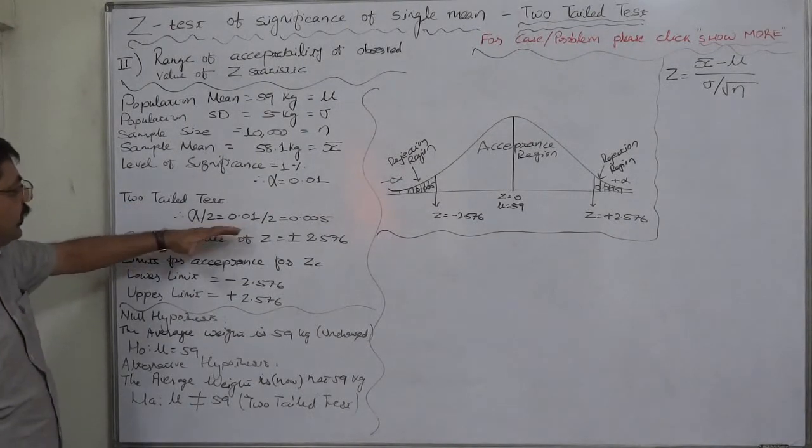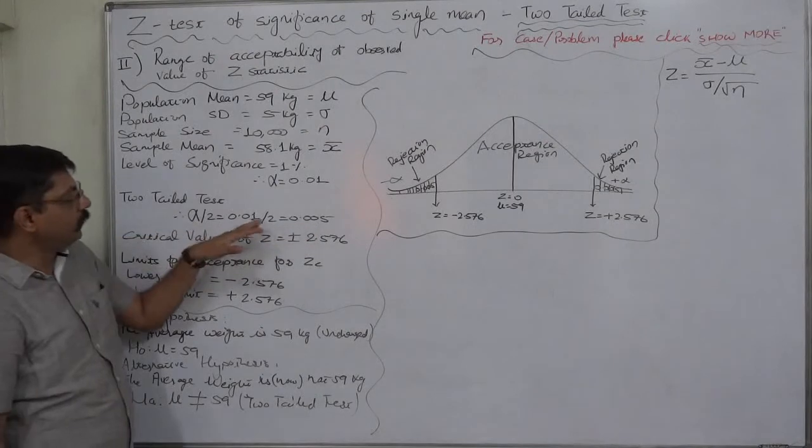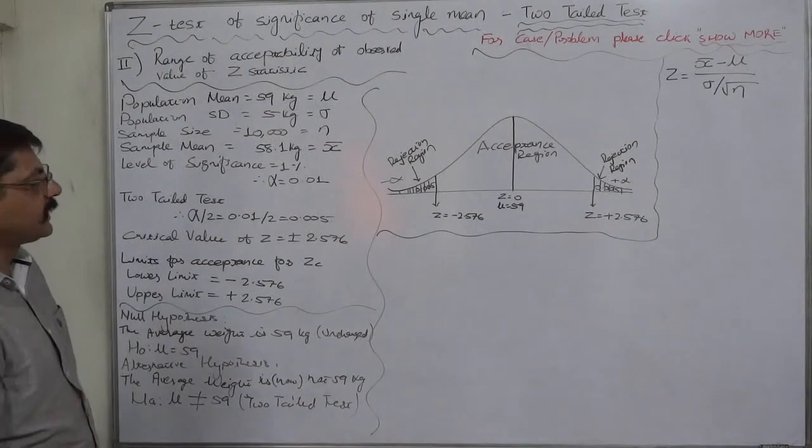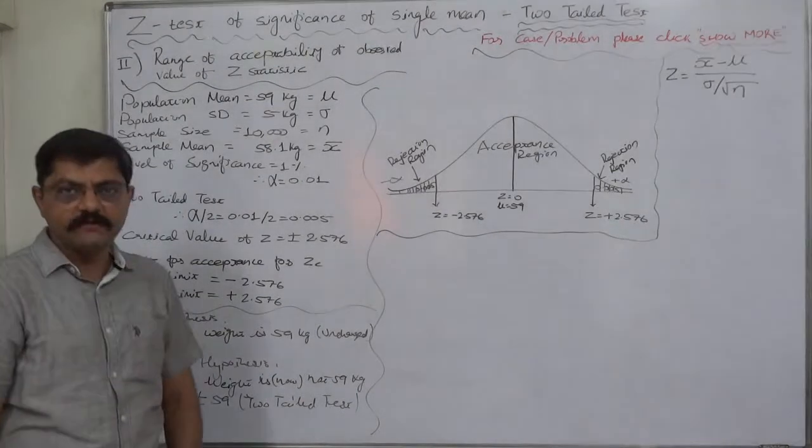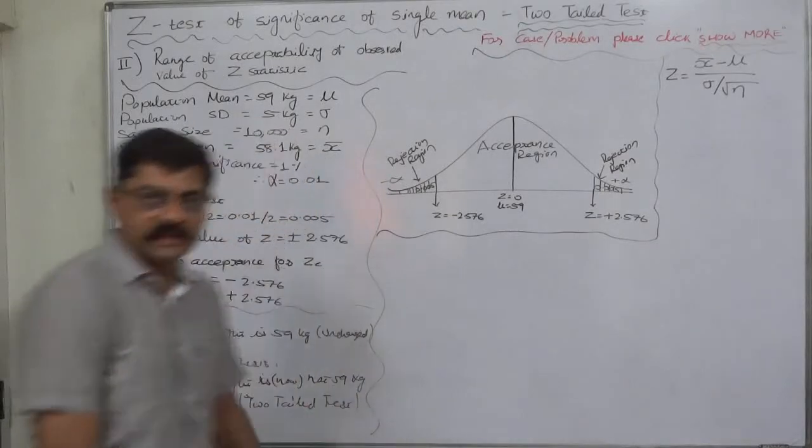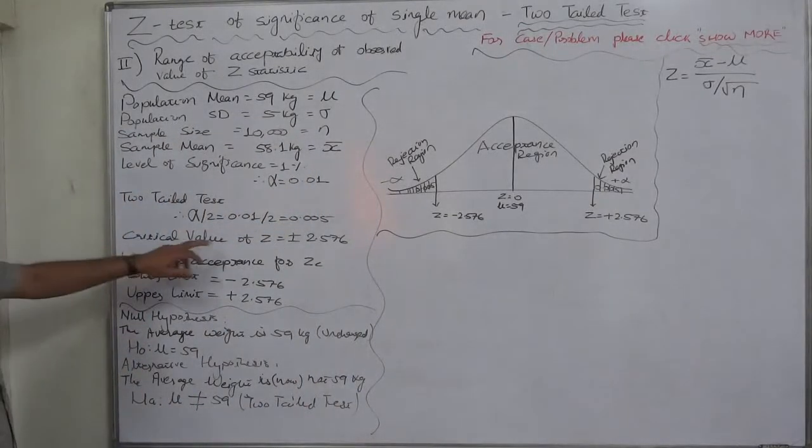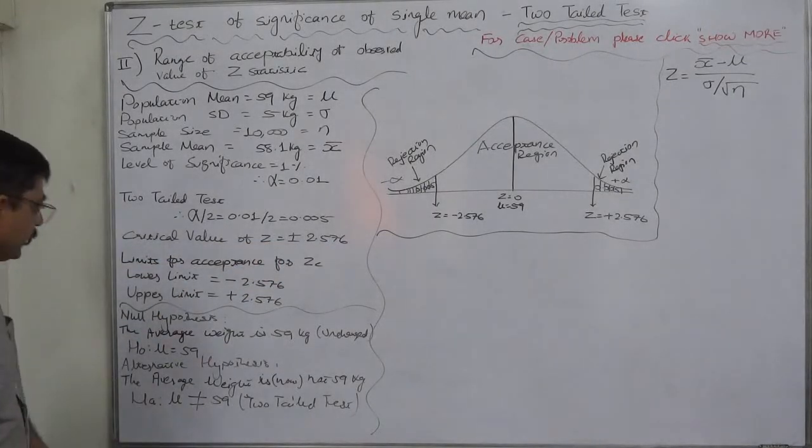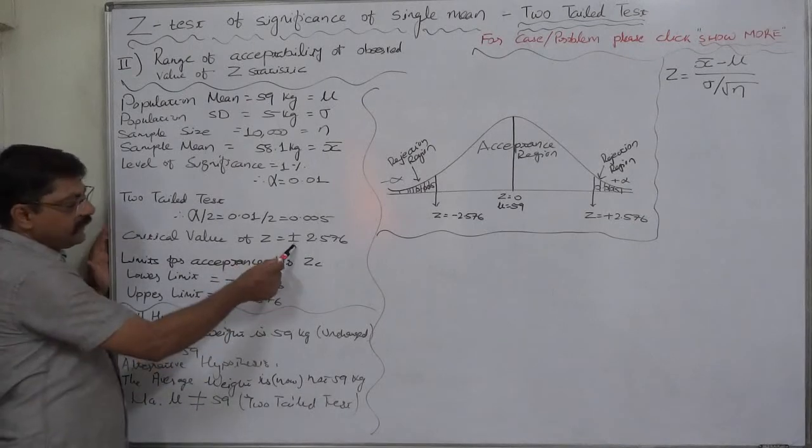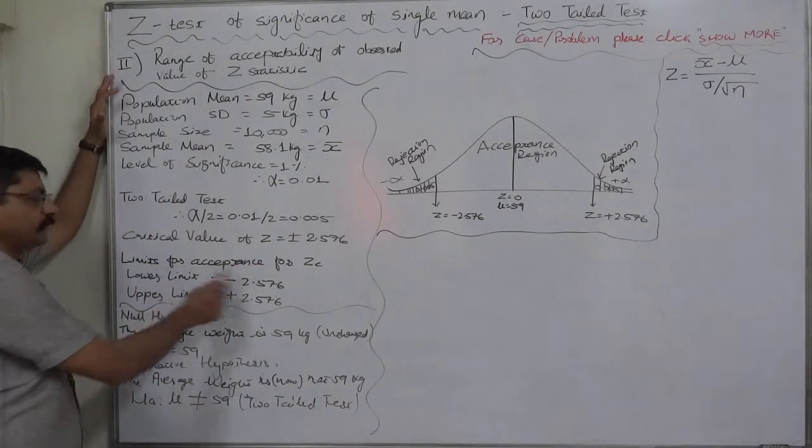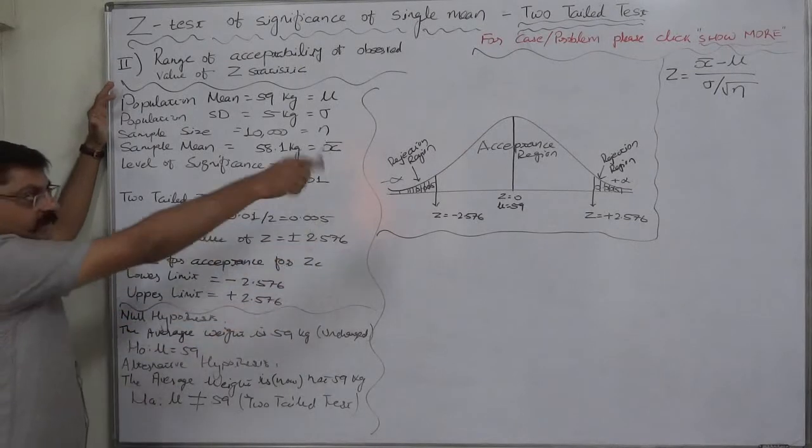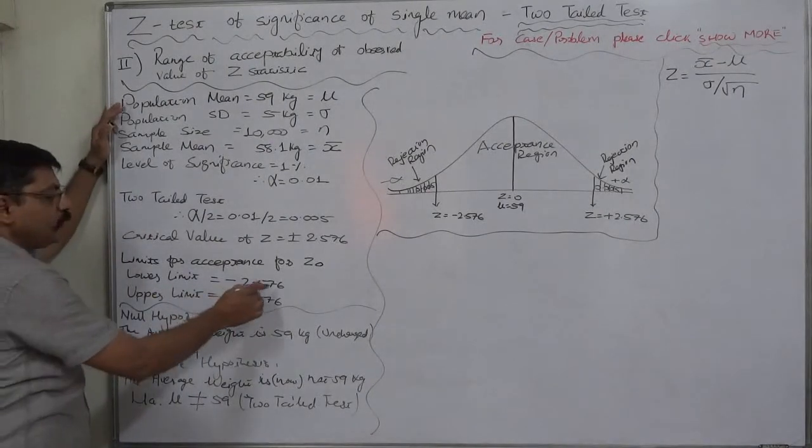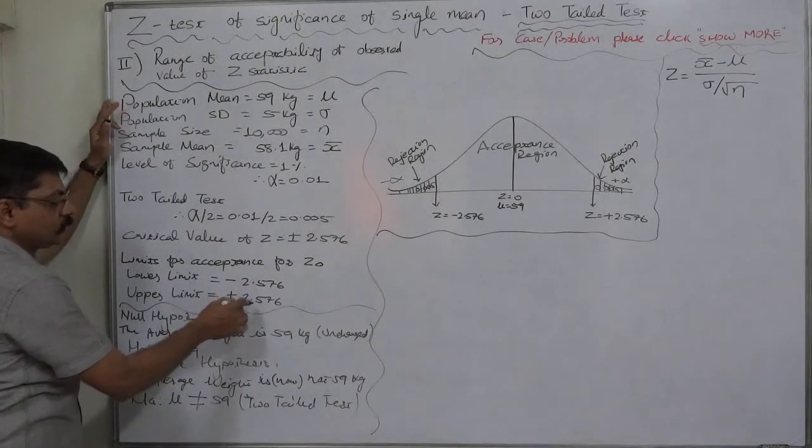Since this is two-tailed test, we need to split the alpha value 0.01 divided by 2, 0.005. That helps us to decide the critical value from the chart which I have already discussed in the previous lecture. And the critical value of Z comes to 2.576. Since this is two-tailed test, it is positive or negative. On the basis of this, we can have the acceptance limits. Lower limit is minus 2.576, upper limit is plus 2.576.